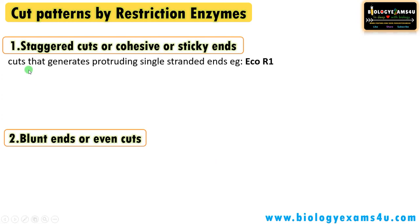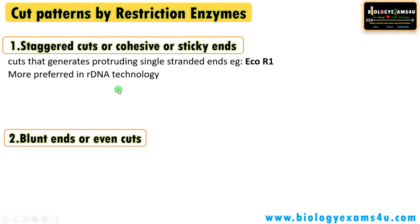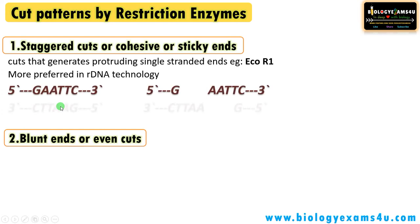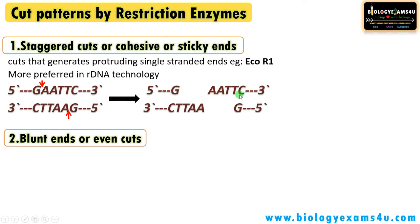The first cut pattern is sticky ends, or staggered cuts — where the enzyme cuts generate protruding single-stranded ends or extensions. In the case of EcoRI cutting at GAATTC, after the cut there are single-stranded overhangs or extensions. This type of cut is called a staggered cut or sticky-end cut, and enzymes that make sticky ends are preferred in recombinant DNA technology.